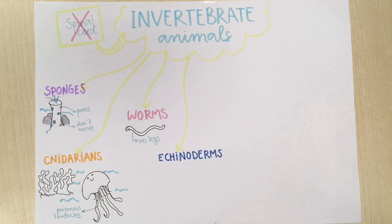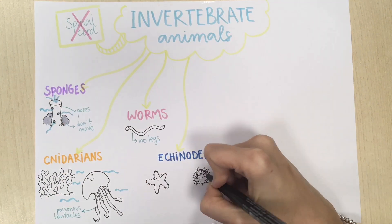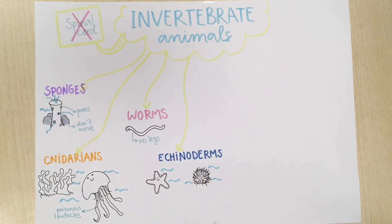The next group is echinoderms, which include starfish and sea orkins. Their body is made up of hard plates and they are aquatic. Starfish have tiny feet to move around and sea orkins have spines that protect their body and allow them to move.